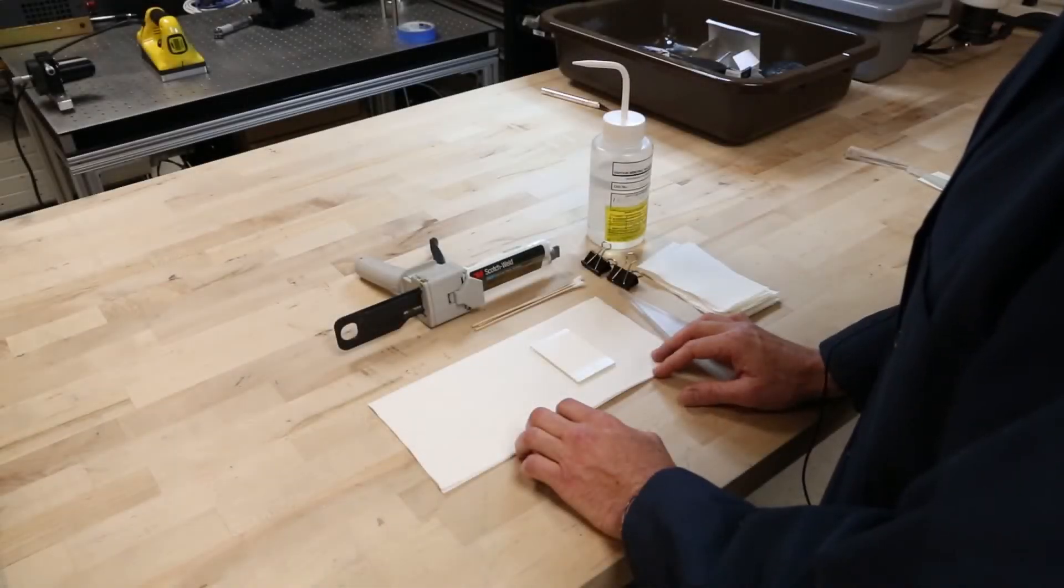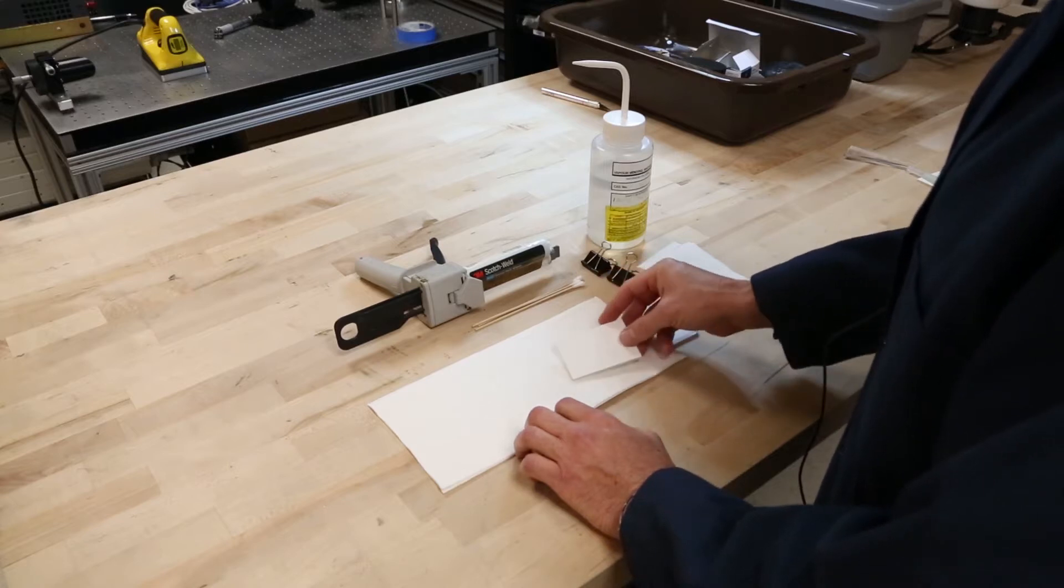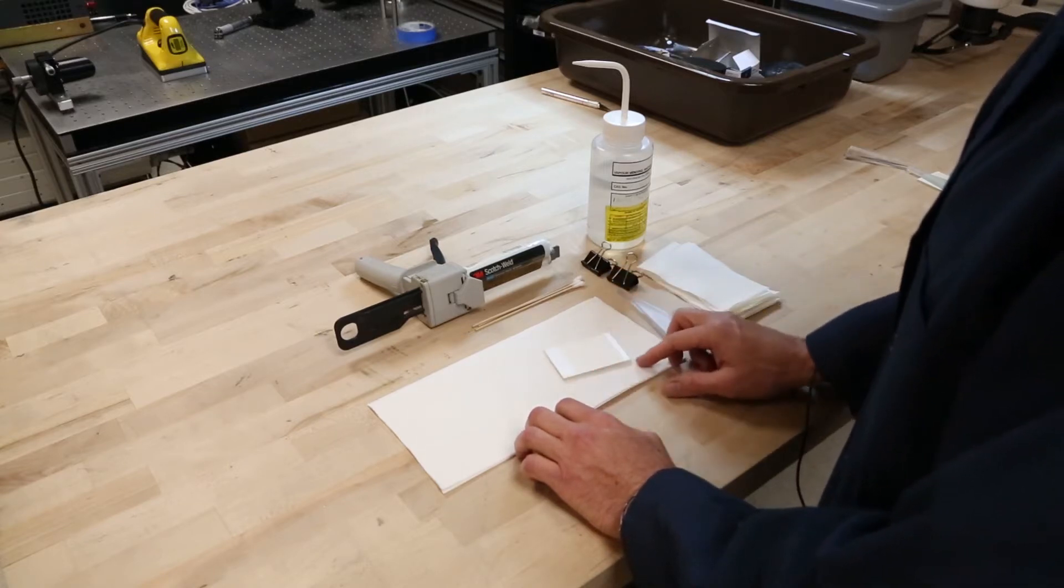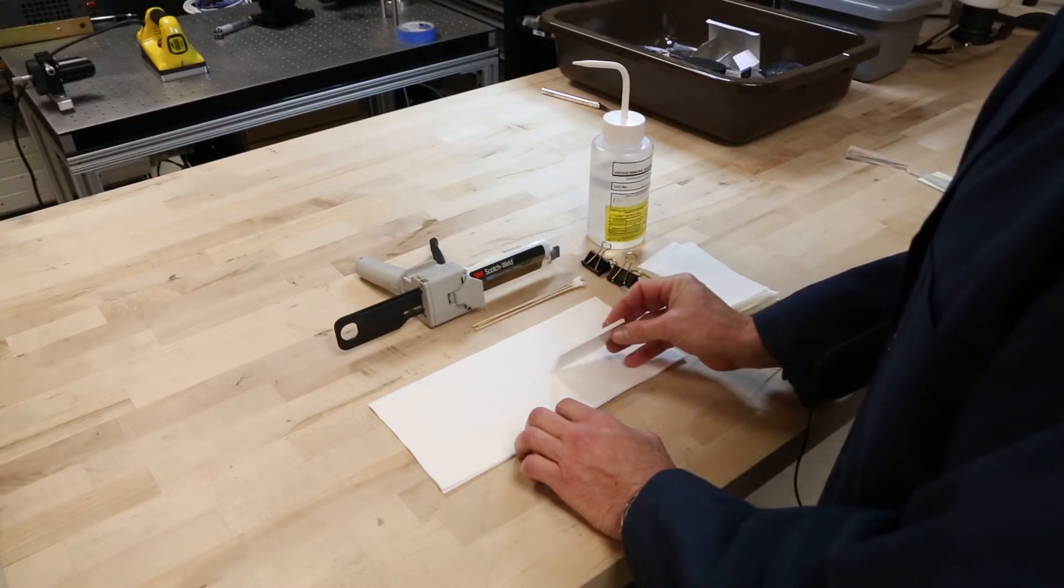This is an example of how I like to make a measurement on a coupon of backsheet. I like to use something that's about 50 by 75 millimeters. I simply laminate the backsheet to a slide of 1/8-inch glass.